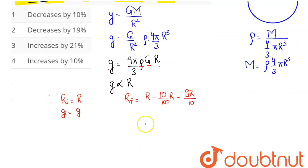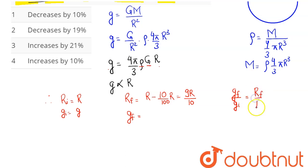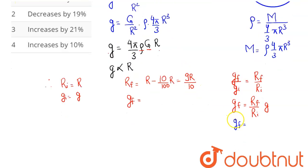Since g is proportional to r, we have g_f / g_i = r_f / r_i. Therefore the final value of g equals (r_f / r_i) times g_i, which is (9r/10) divided by r, times g. This gives us 9g/10, or 0.9g.